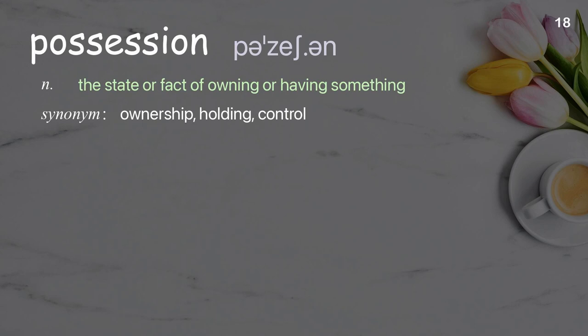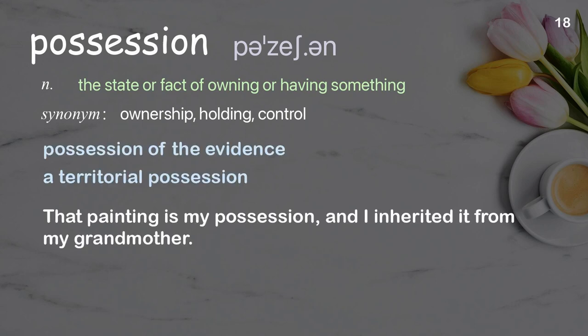Possession: The state or fact of owning or having something. Examples: possession of the evidence, a territorial possession. That painting is my possession, and I inherited it from my grandmother.